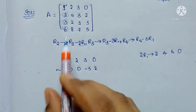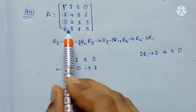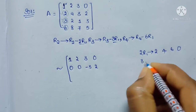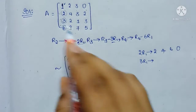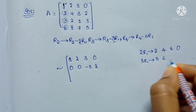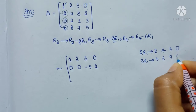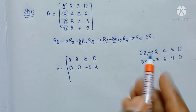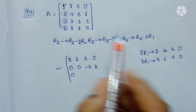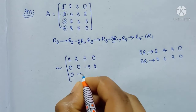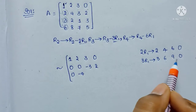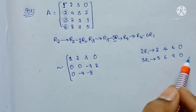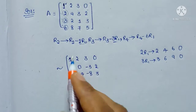For R3, applying R3 minus 3R1: 3R1 gives 3×1=3, 3×2=6, 3×3=9, 3×0=0. So R3 minus 3R1: 3−3=0, 2−6=−4, 1−9=−8, 3−0=3.